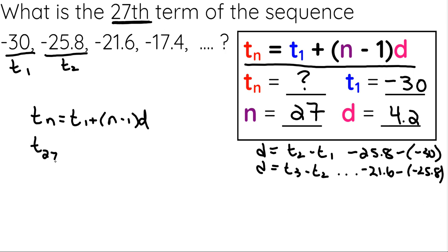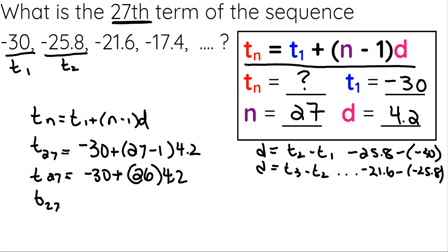So we want to find the 27th term, and that is going to be the first term, plus n minus 1, multiplied by the difference of 4.2. So the 27th term is going to be negative 30 plus, 27 take away 1 is 26, multiplied by 4.2. So my 27th term will be negative 30 plus, and now I just do 26 multiplied by 4.2. That's 109.2.